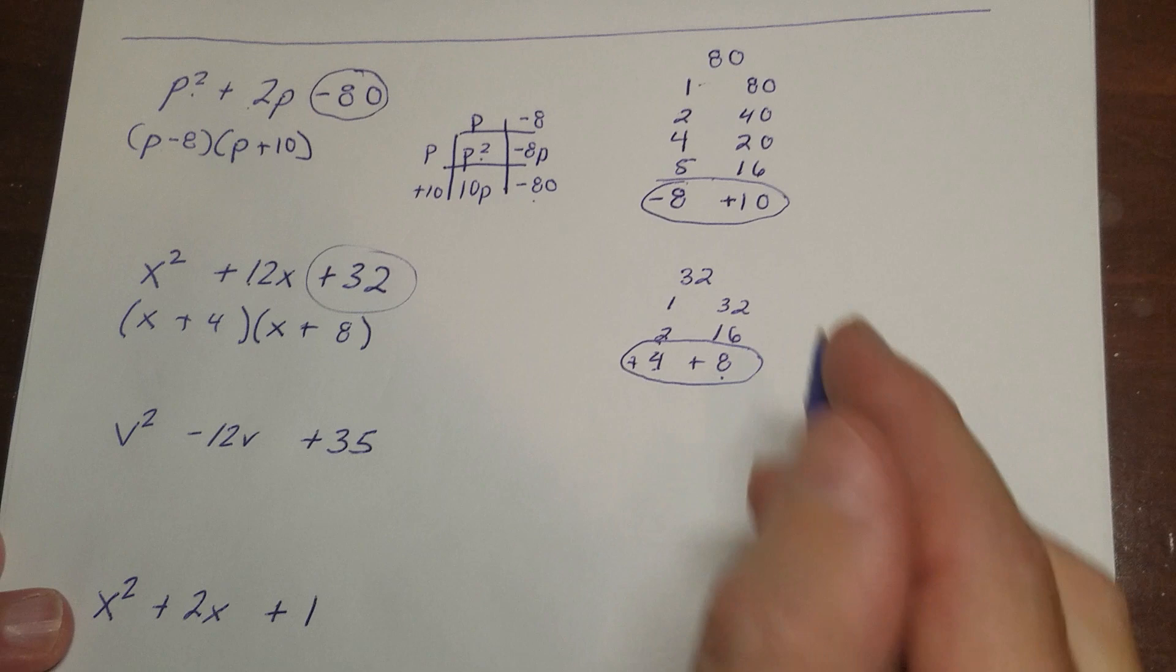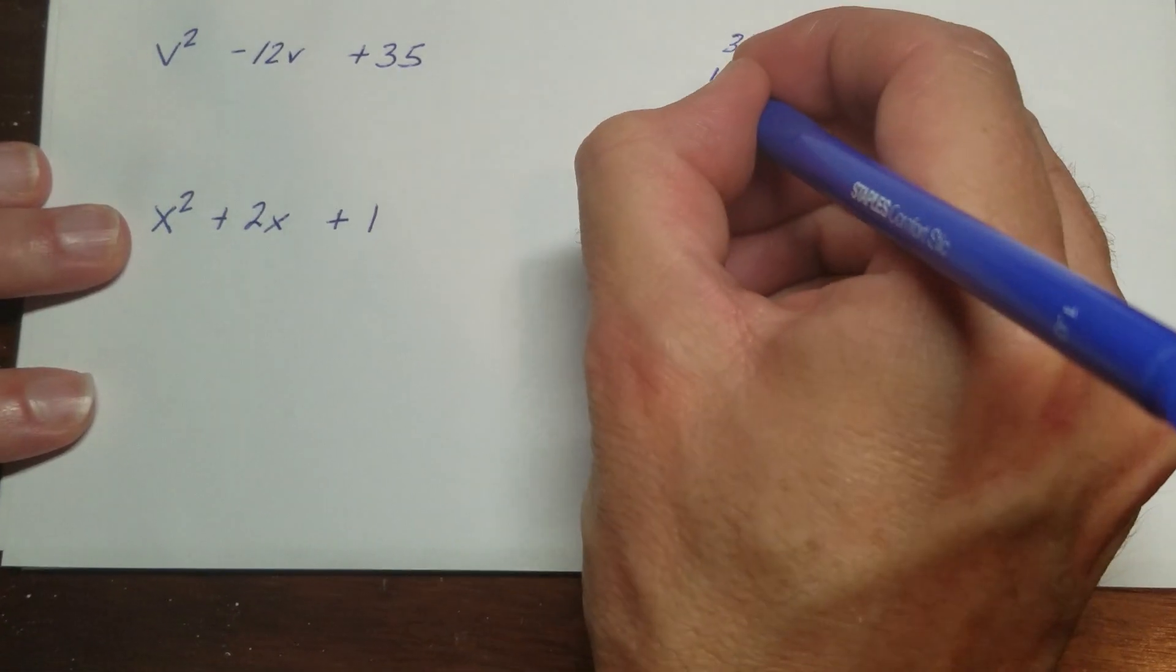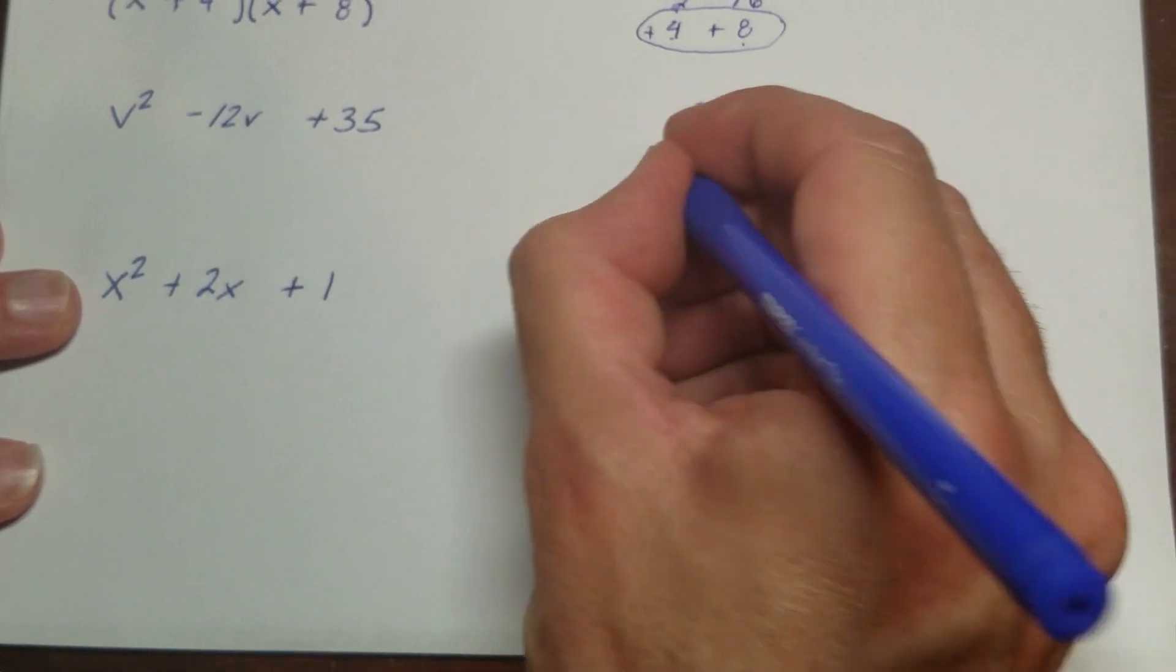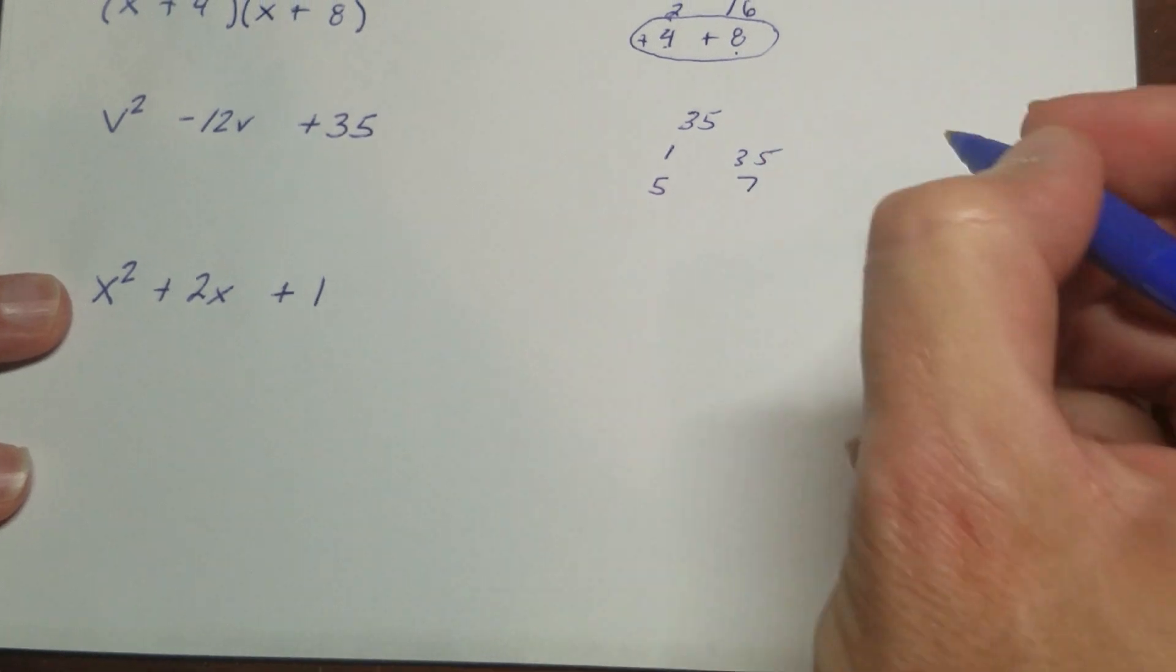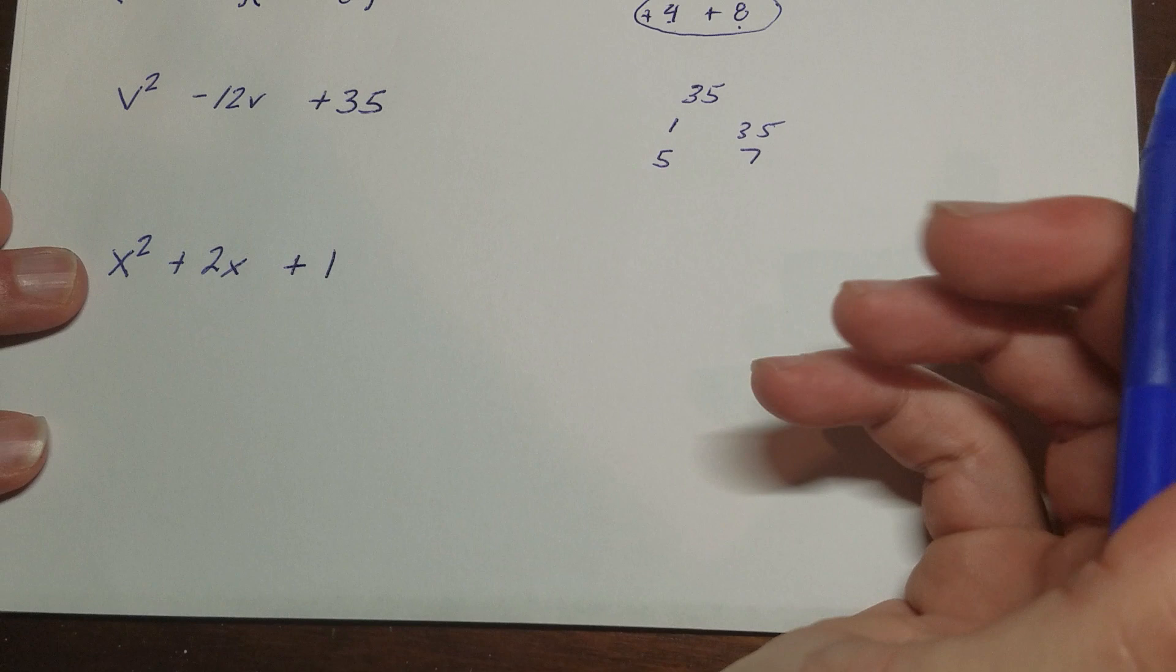And you could check it if you want. But that's what the answer is going to be. The next one here is 35. So I write down 35. I start with 1 and 35. 2 doesn't work. 3 doesn't work. 4 doesn't work. 5 works. 5 works with 7. And then 6 doesn't work. And then I'm at 7. So I know that this is really it for 35.